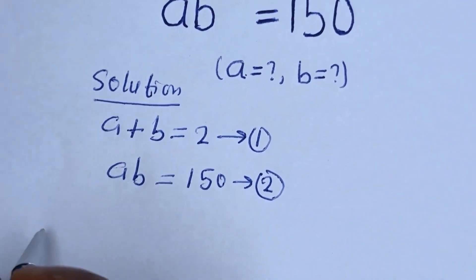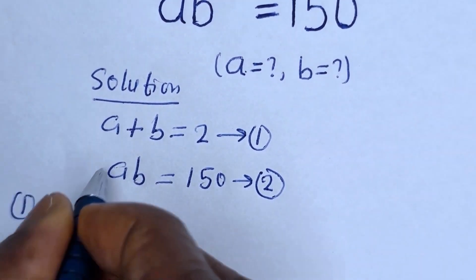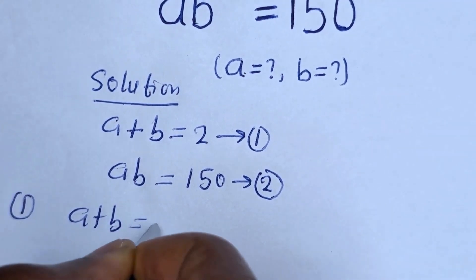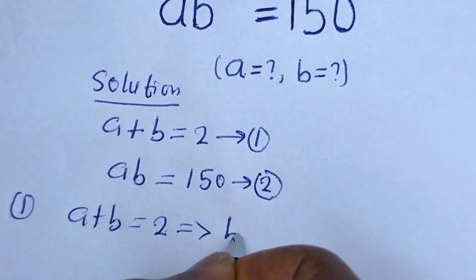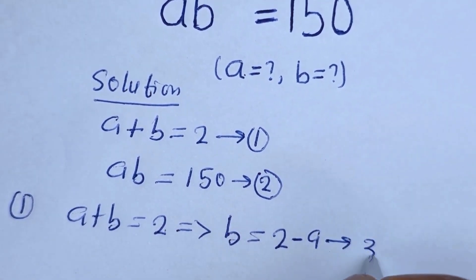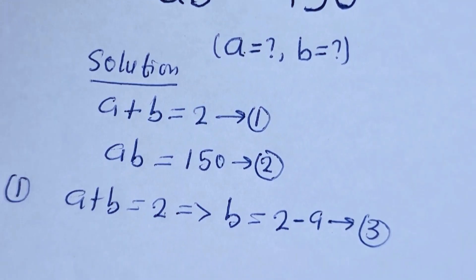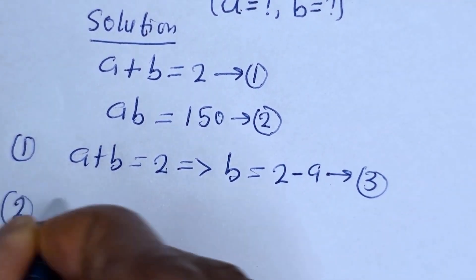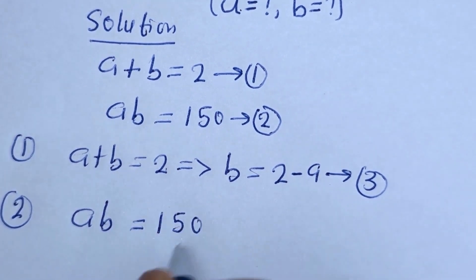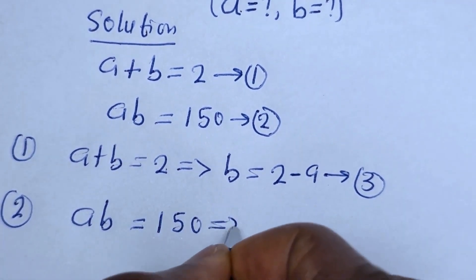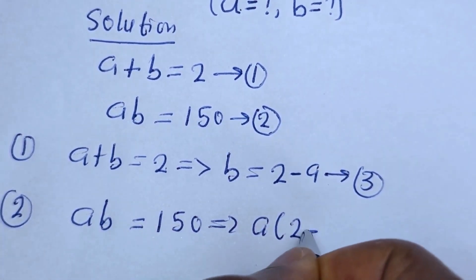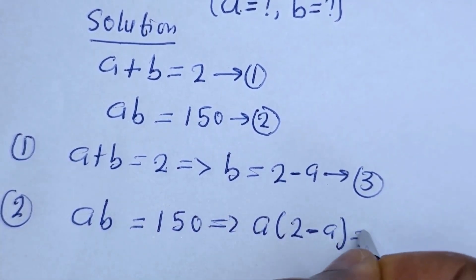From equation 1, A plus B is equal to 2, then B is equal to 2 minus A. Let us call this equation 3. Also from equation 2, AB is equal to 150, so A multiplied by (2 minus A) is equal to 150.